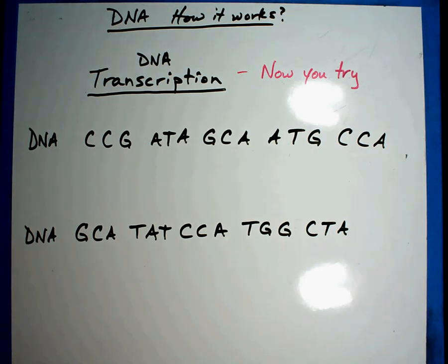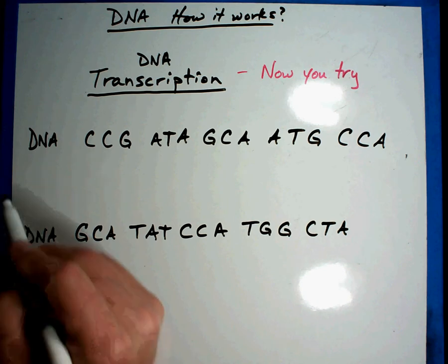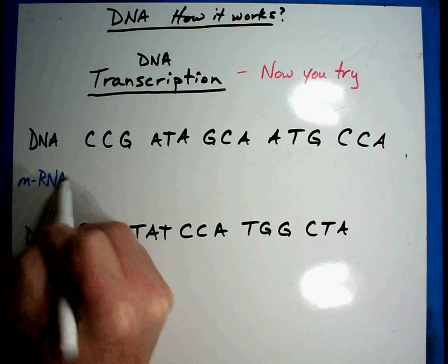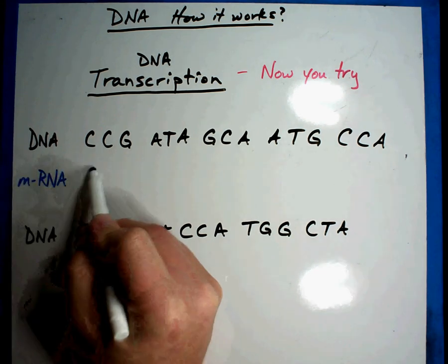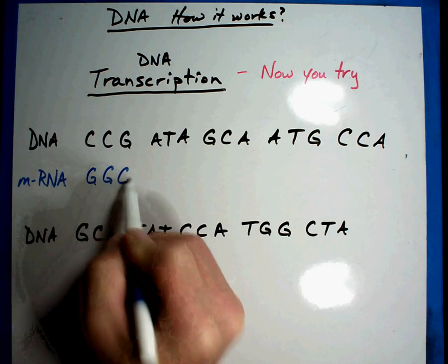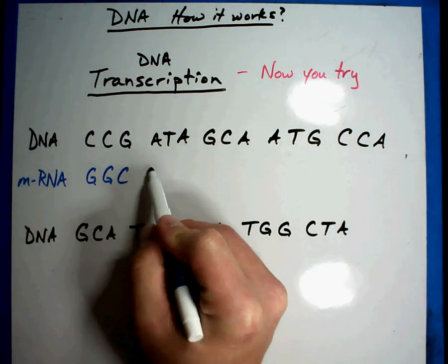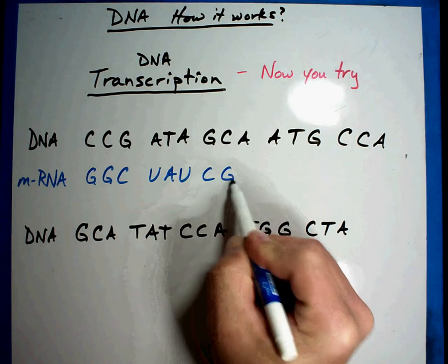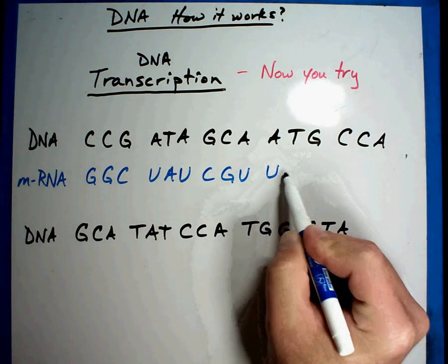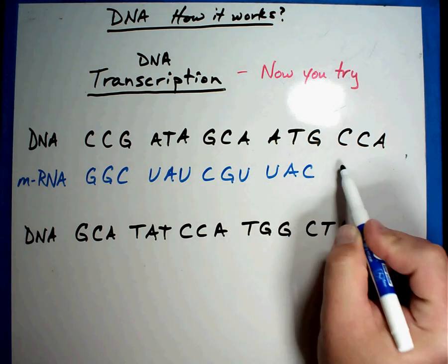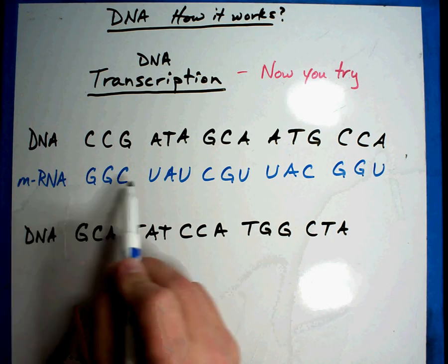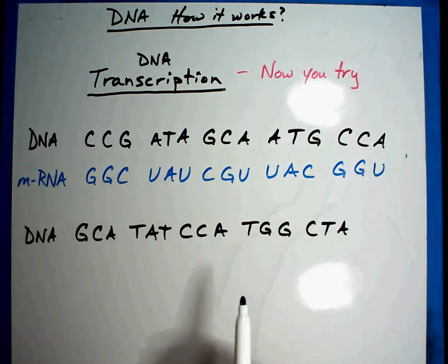Alright, let's see how you did in making your messenger RNA. Here's the answer you should have gotten: GGC UAU CGU UAC GGU. There's your first secret message. See how you did on this one.